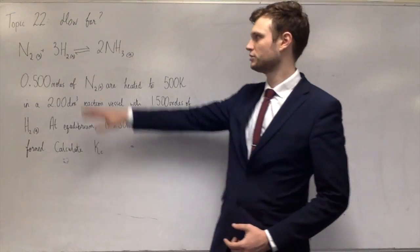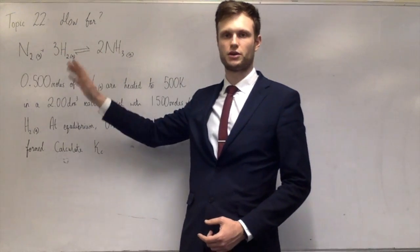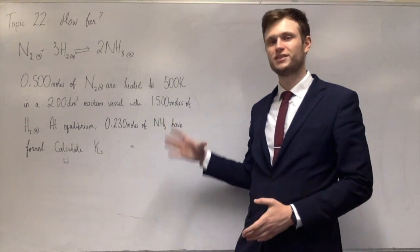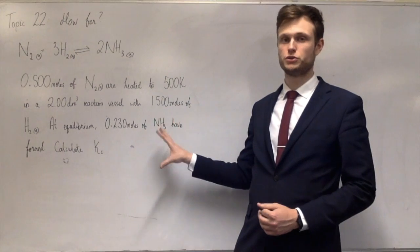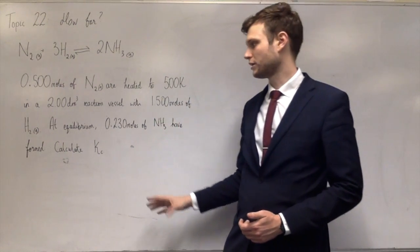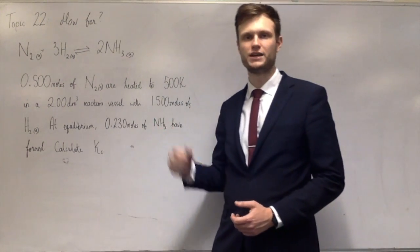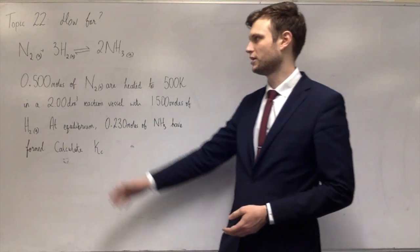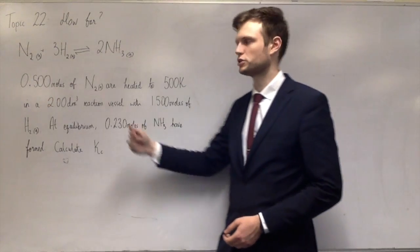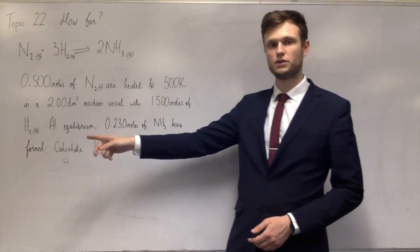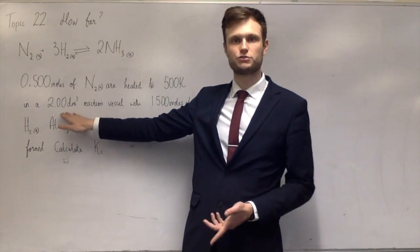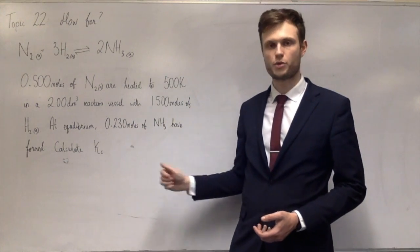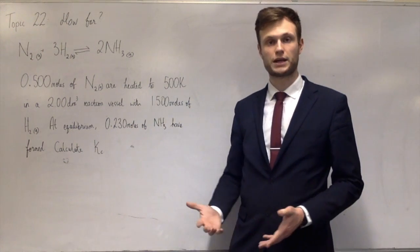The classic equilibrium reaction is the reaction of nitrogen and hydrogen to make ammonia. The reaction involves half a mole of nitrogen and one and a half moles of hydrogen in a two decimetre cubed reaction vessel. At equilibrium, 0.23 moles of ammonia have been made. Calculate KC.